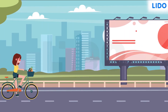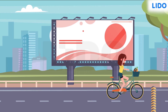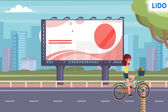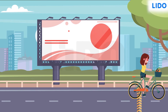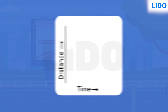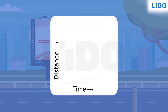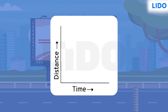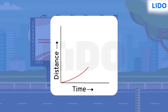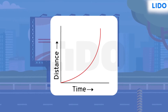Imagine a situation where Shweta has to constantly change her speed because of speed bumps and traffic. The speed of Shweta here is not constant. In this case, the distance-time graph formed is curved.